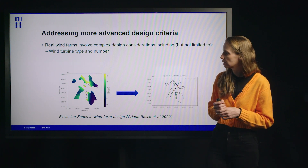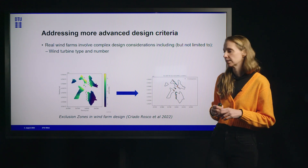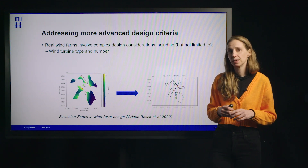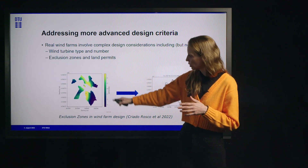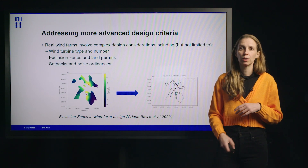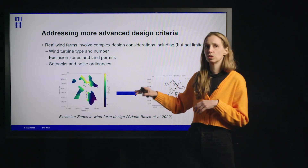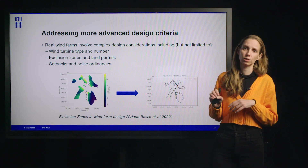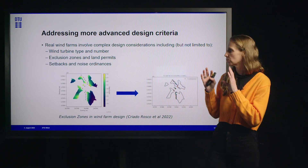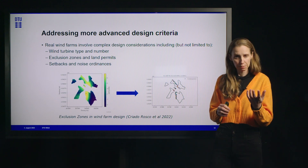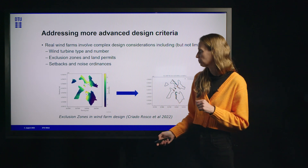More complex design considerations include turbine type and selection — we may have multiple turbine types in the same wind farm and may be able to adjust the number. Exclusion zones and land permits, setbacks and noise ordinances — there's a huge number of factors that go into wind farm design. Today you've only been exposed to a few examples of the design considerations we actually think about in practice.